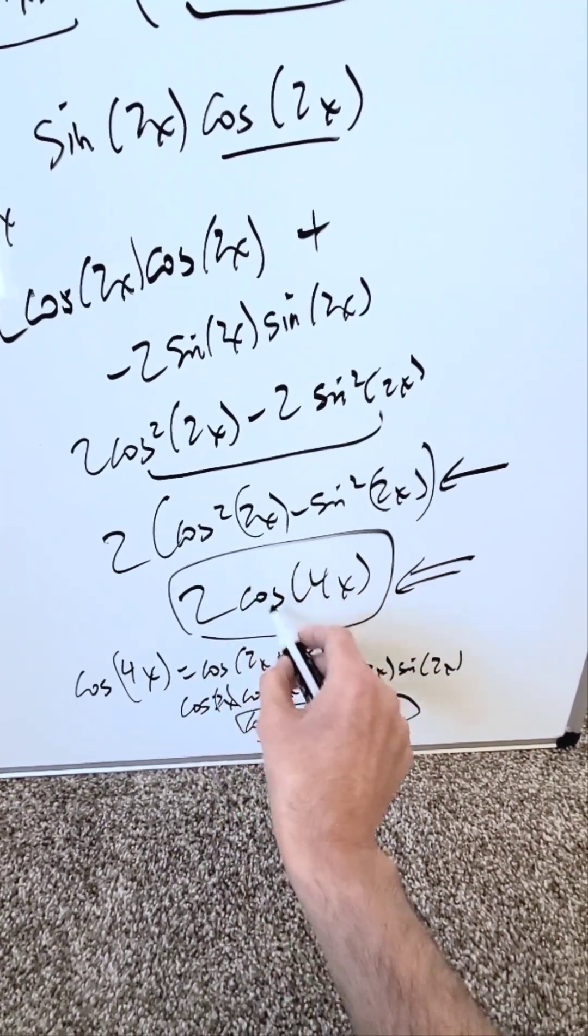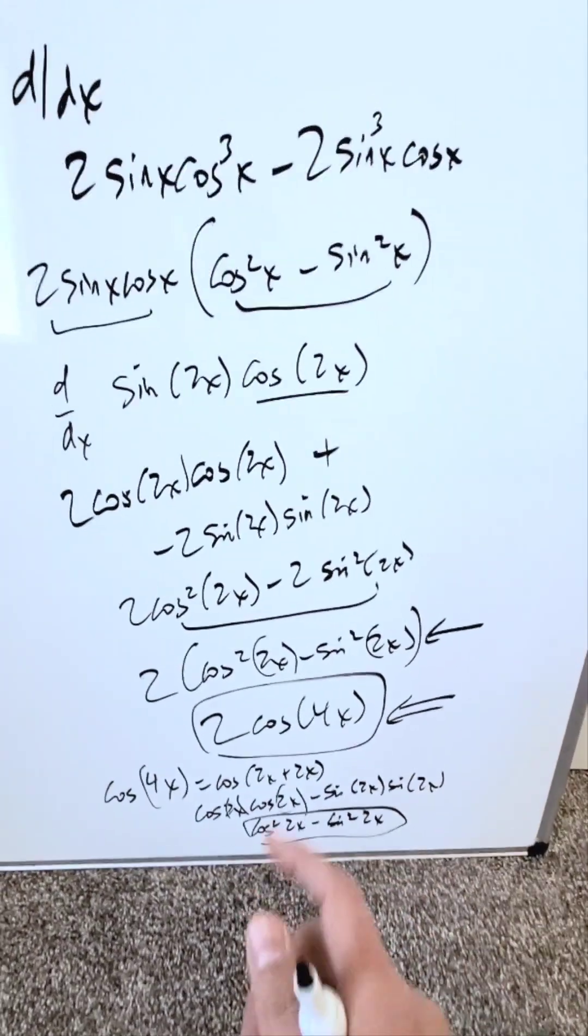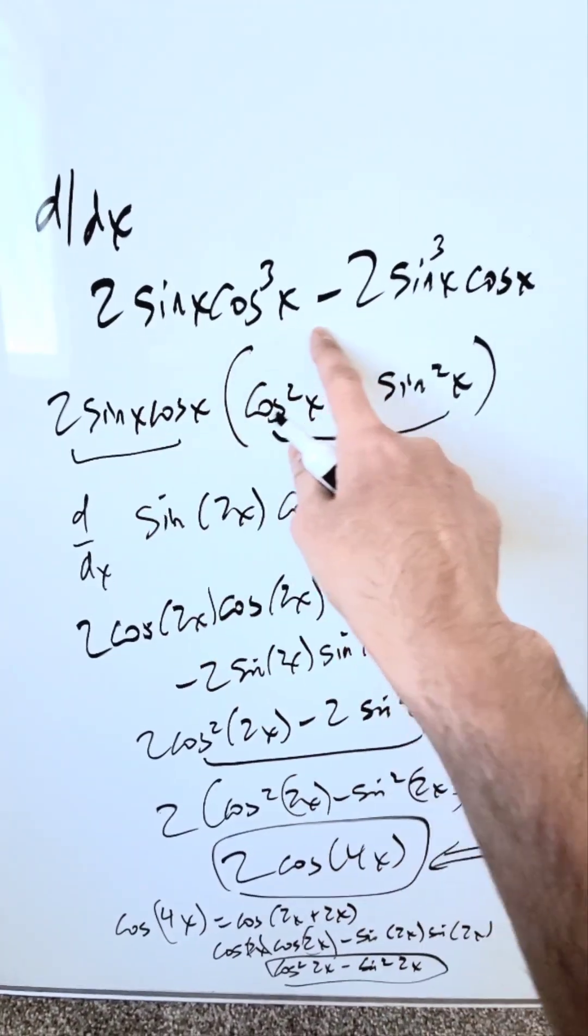Your end result here, 2cos(4x), is the correct derivative of this expression that you see here at the very top.